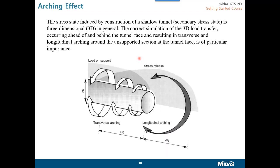The first reason why 3D analysis is necessary is the arching effect. Along the length of a tunnel, as we advance through first, second, and third excavations, there is both longitudinal and transverse arching. In 2D modeling, we cut a section at one point and model that — but in reality, the soil enters a secondary stress state and the dissipation is different. This arching effect cannot be simulated in 2D, so it is always better to go for 3D analysis.